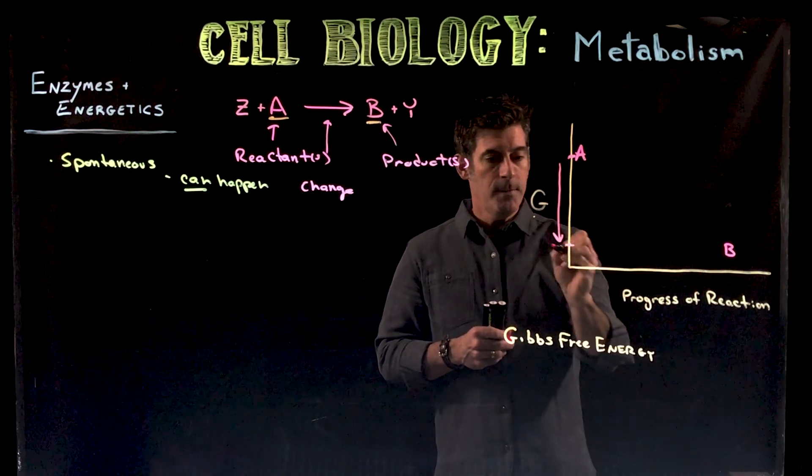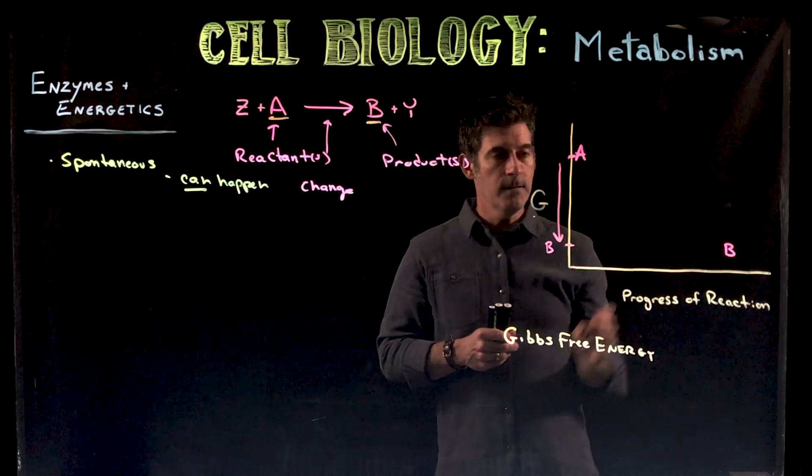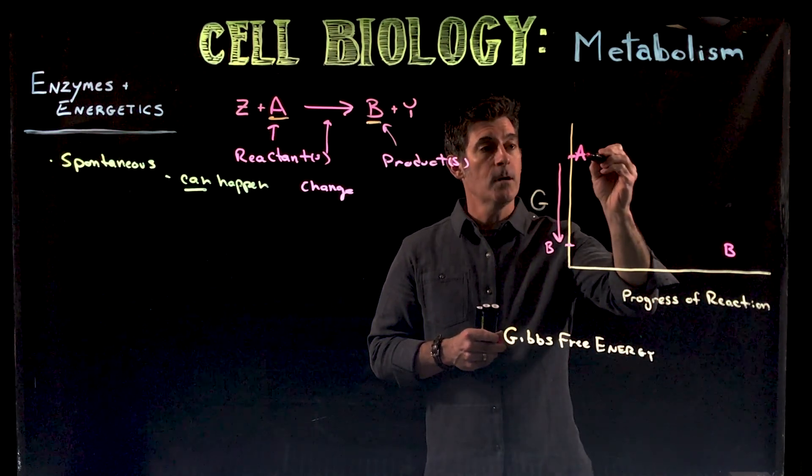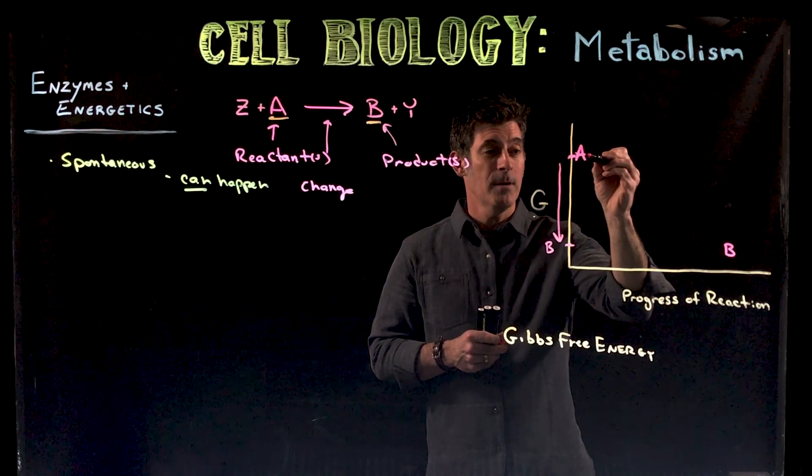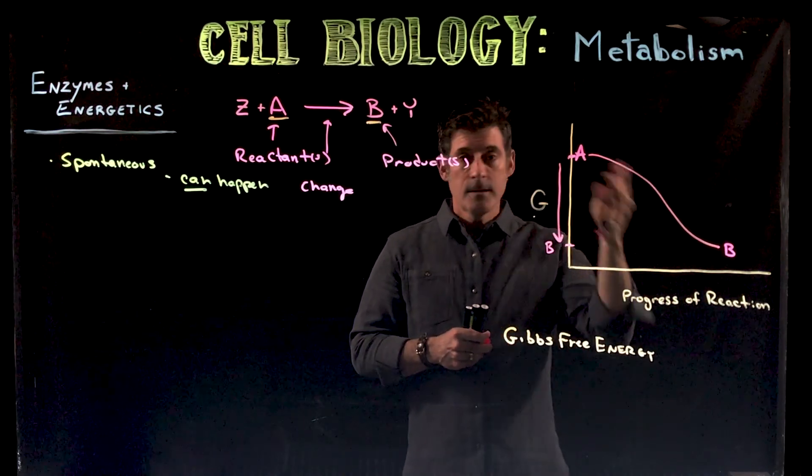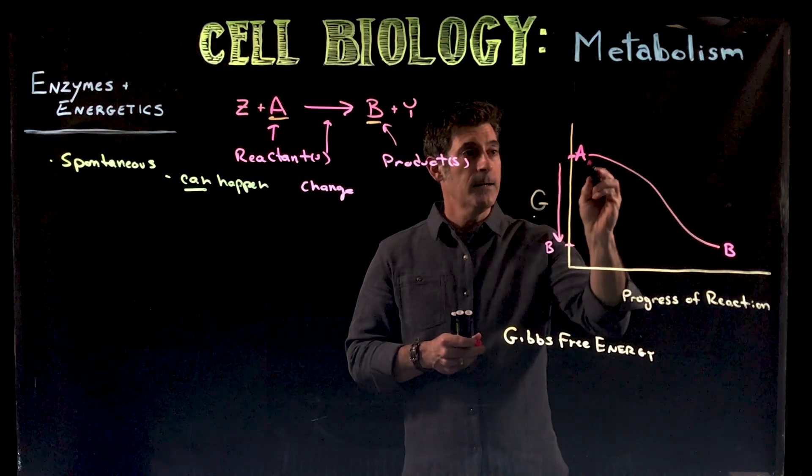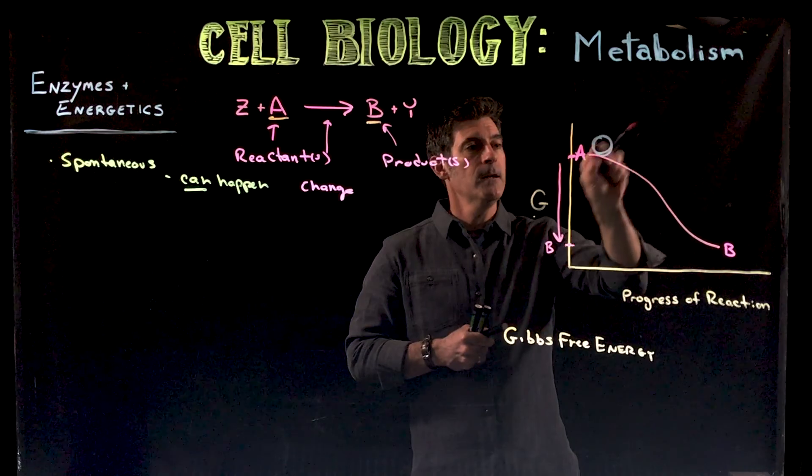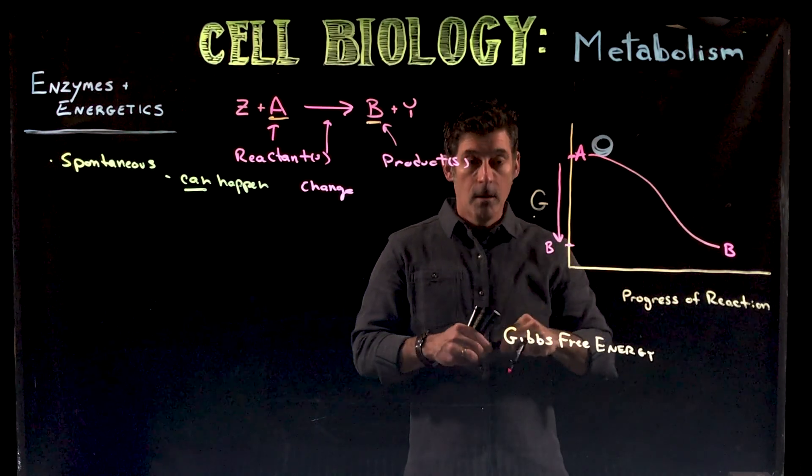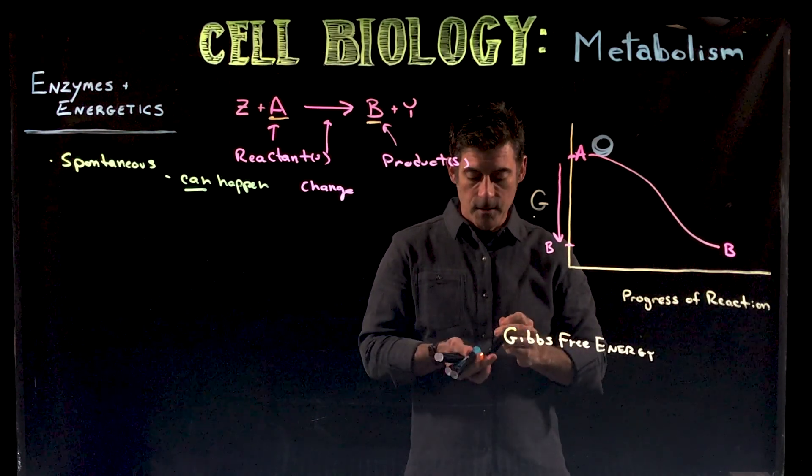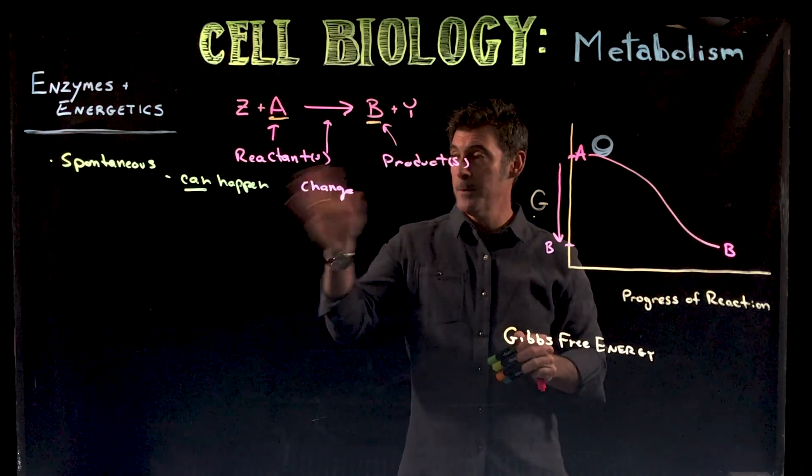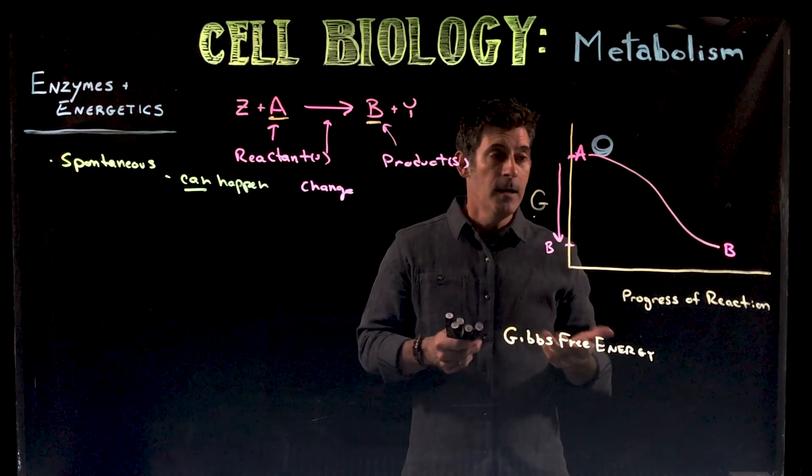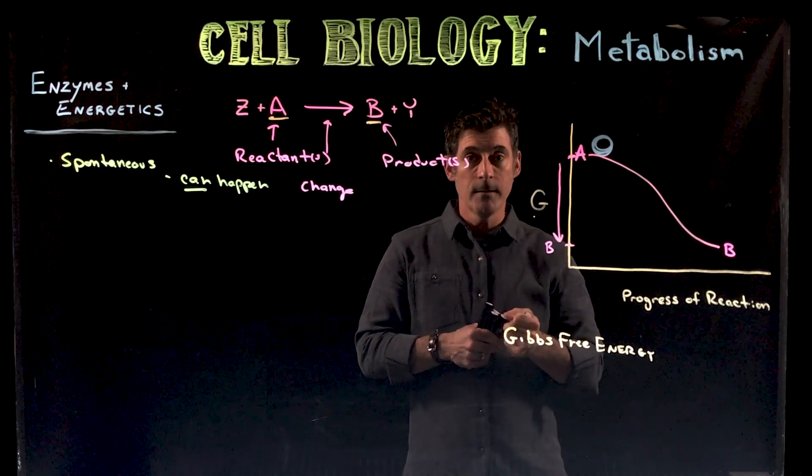Then the product B is down here, at a much lower energy level. The energy from A to where B is at the end of the reaction - B is a lot lower. Our curve, I'll just draw it coming down like this. You can see it's a downhill curve, just like if you had a ball up at the top of a hill.